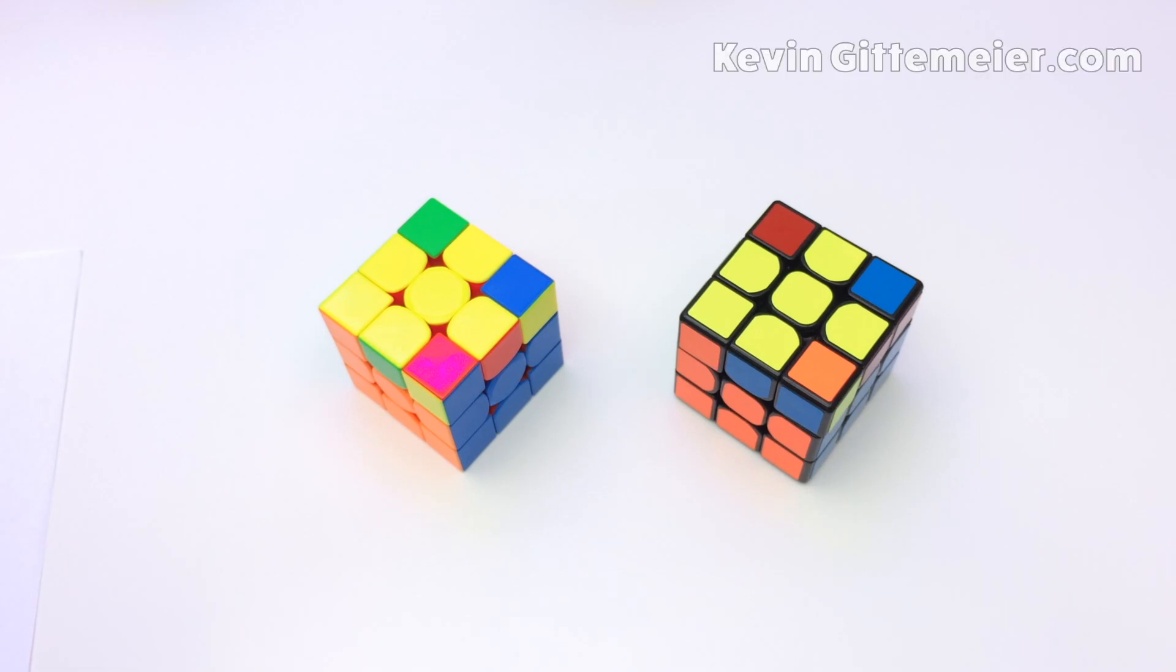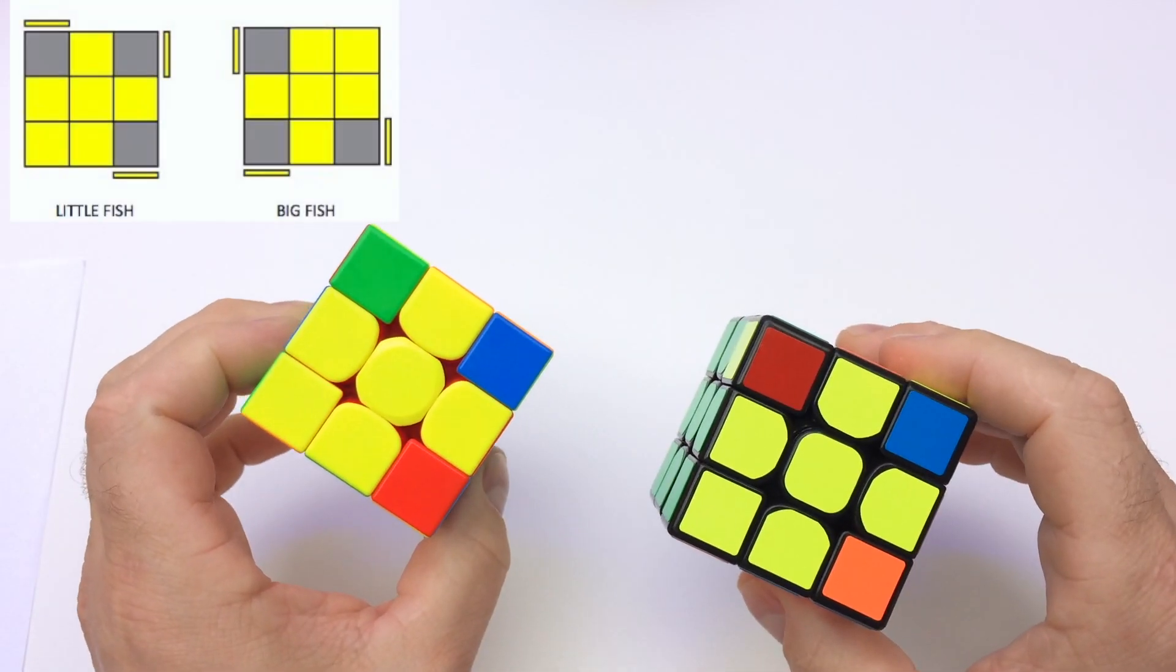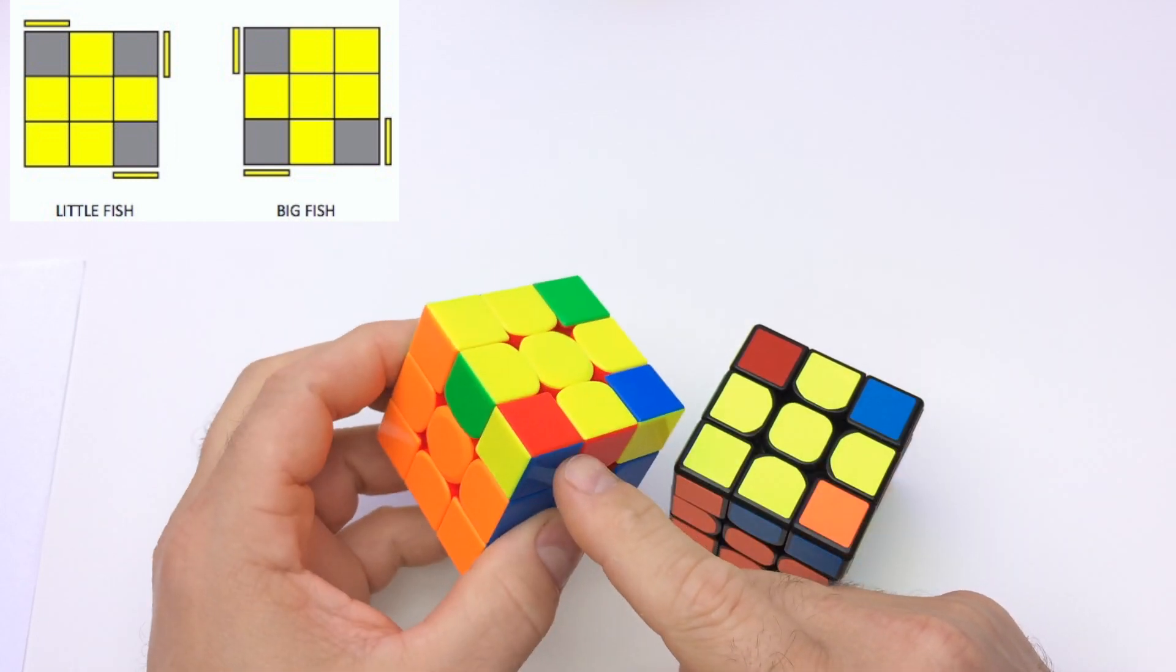First we start with the fish patterns which get their name because someone thought this looked like a fish. Notice that although these two patterns look the same from the top, they are different because of the way the yellow stickers are oriented on the sides.